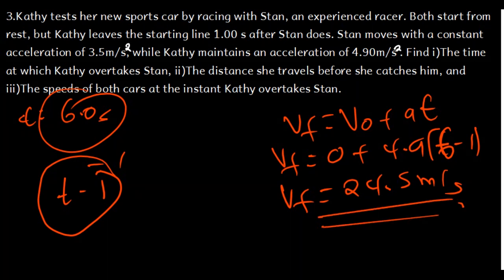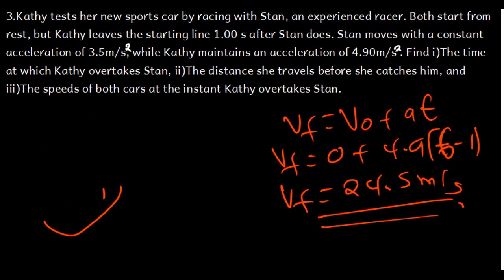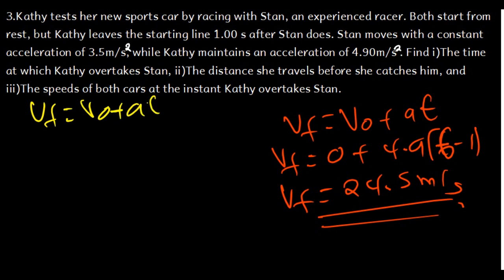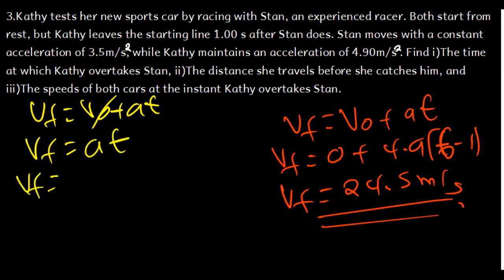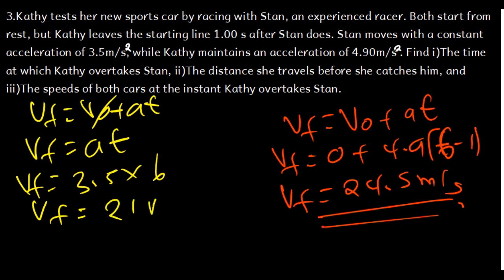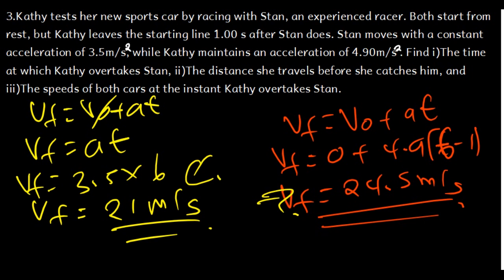For Sten, using V_final = V_initial + aT with initial velocity zero: V_Sten = 3.5 × 6 = 21 meters per second. So Sten's velocity is 21 m/s and Kathy's velocity is 24.5 m/s at the instant Kathy overtakes Sten.